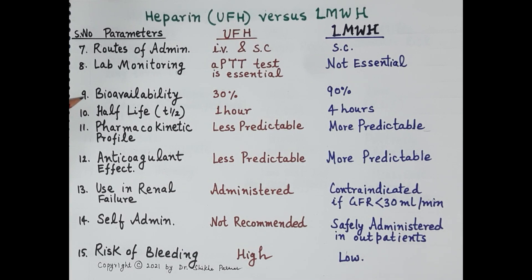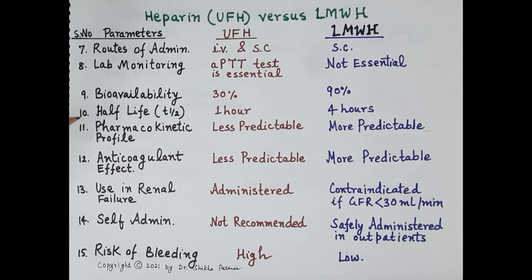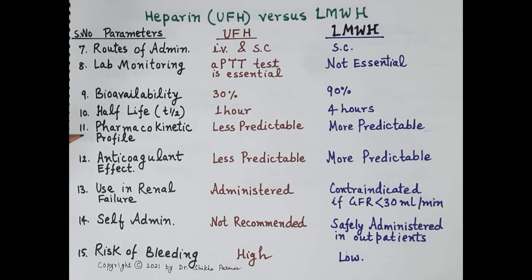Regarding bioavailability: unfractionated heparin binds not only to plasma proteins but also to macrophages and other cells, resulting in low bioavailability of about 30%, whereas low molecular weight heparin exhibits high bioavailability of around 90%. The half-life of unfractionated heparin is one hour, while for low molecular weight heparin it is longer, approximately four hours.